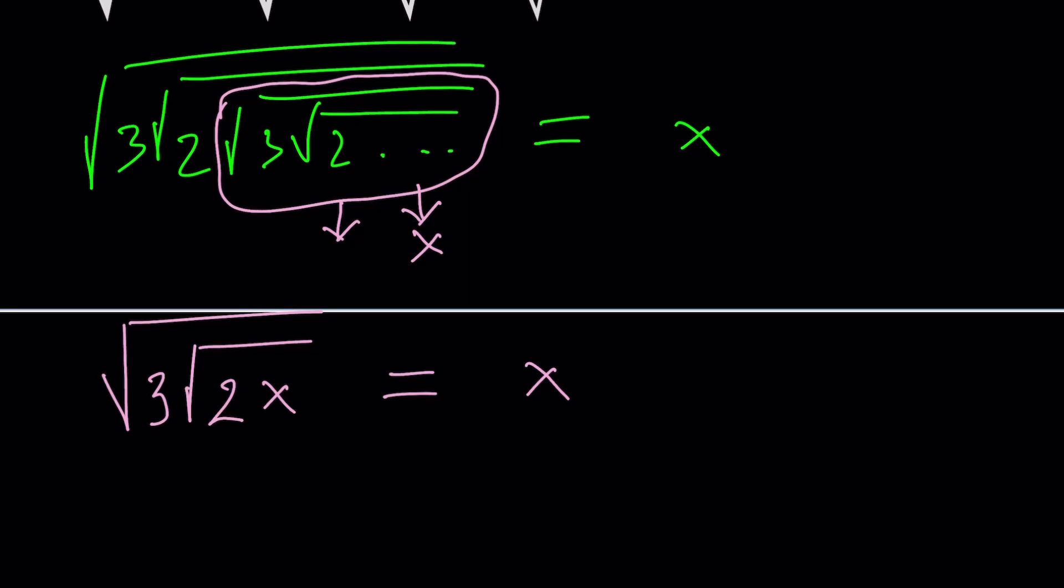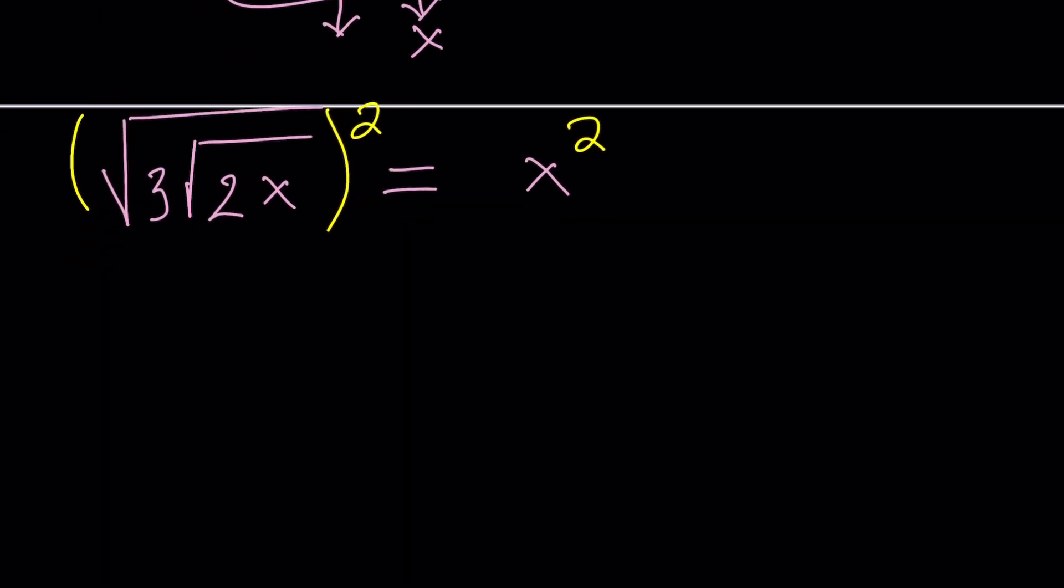Now the next thing we're going to do is not super surprising. We're going to square both sides. Of course we have a radical and we're going to square it. That takes care of the outer radical which is 3 times the square root of 2x and that becomes x squared. Notice that nothing happens inside the radical because this squaring only strips out or takes away the outermost radical.